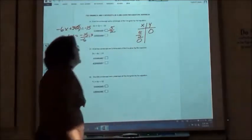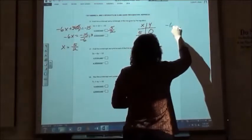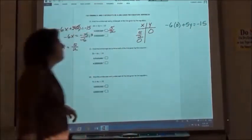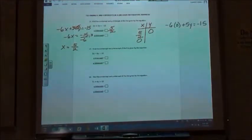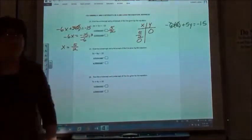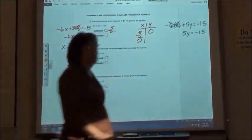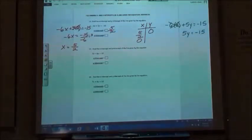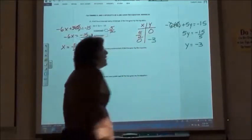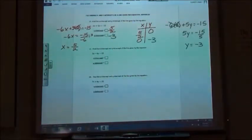We found our x-intercept. We still have to find our y-intercept. Our y-intercept is when we put the 0 in for the x. So we're going to say negative 6 times 0 plus 5y equals negative 15, right? So when we do negative 6 times 0, that's going to be 0 and get rid of that. So we just have 5y equals negative 15. And if we divide by 5, y is going to equal negative 3. So our x-intercept is 5 halves, our y-intercept is negative 3.